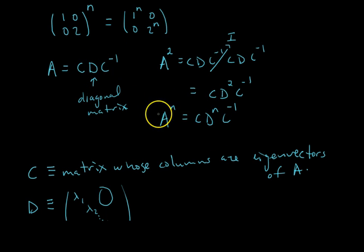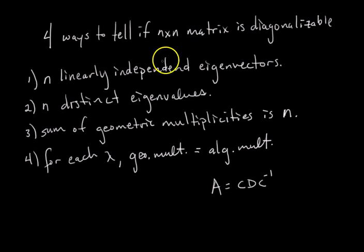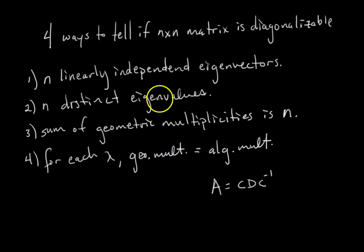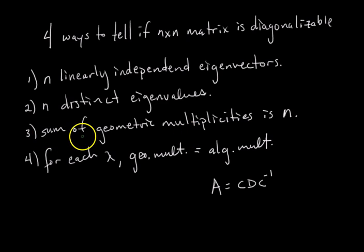There are four ways to tell if an n×n matrix is diagonalizable. First, it must have n linearly independent eigenvectors, so you can construct an invertible C and get A = CDC⁻¹. Second, if you have n distinct eigenvalues — n different eigenvalues — then by a theorem, eigenvectors corresponding to distinct eigenvalues are linearly independent, so you automatically have n linearly independent eigenvectors and the matrix is diagonalizable.